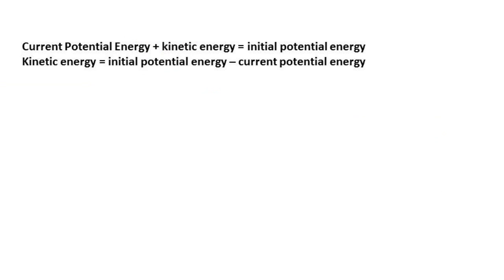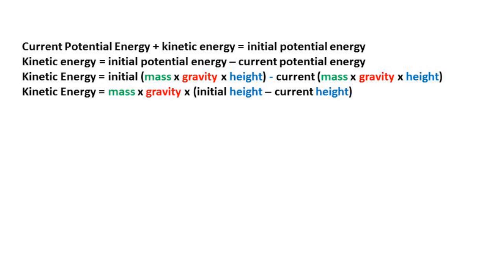Now in order to solve this problem, we will need to complete some rearranging of formulas. Current potential energy plus kinetic energy equals initial potential energy. Rearranging this, we get kinetic energy equals initial potential energy minus current potential energy. After substituting the potential energy equation of mass times gravity times height and completing some more simplification, we get mass times gravity times initial height minus current height, or the height delta, equals kinetic energy.